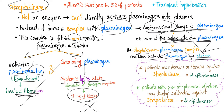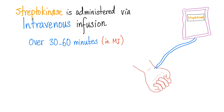Now let's talk about side effects of streptokinase. Allergic reactions occur in about 5% of patients. There is also transient hypotension. Patients can develop antibodies against streptokinase, leading to decreased effectiveness. Patients with prior streptococcal infection may also develop antibodies against streptokinase, again decreasing its effectiveness. Streptokinase is administered via intravenous infusion — a slow process over 30 to 60 minutes, unlike a rapid IV injection.